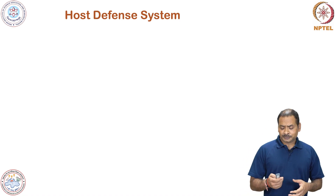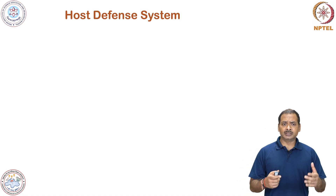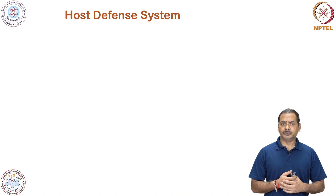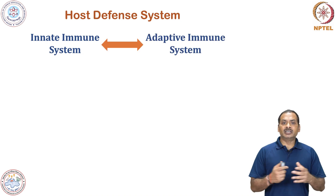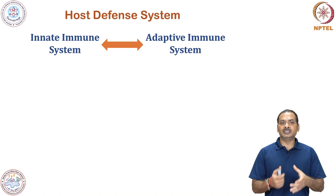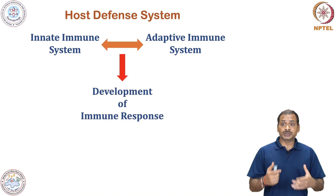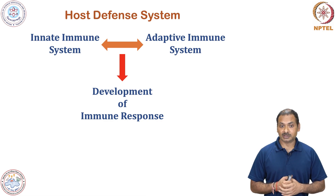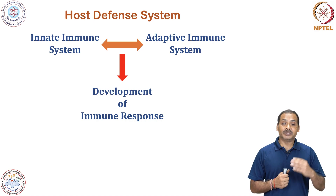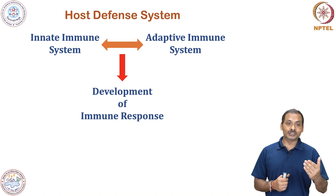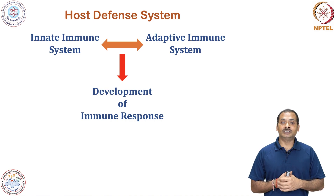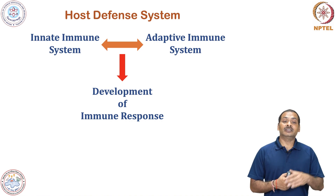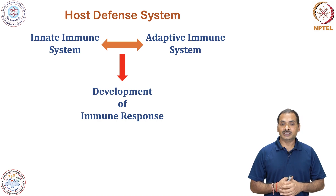There are two major arms of the immune system: the innate immune system and the adaptive immune system. These two systems communicate with each other and induce the development of an appropriate immune response. Appropriate immune response means there should be neither more nor less immune response. If there is excess immune response, that may result in disease — in technical terms, we call it immunopathogenesis.